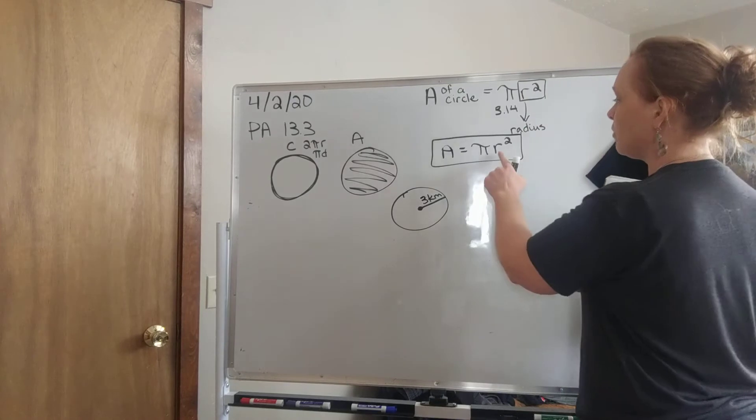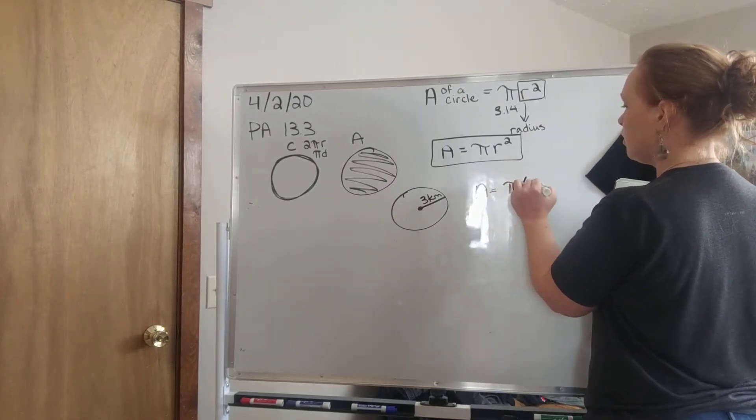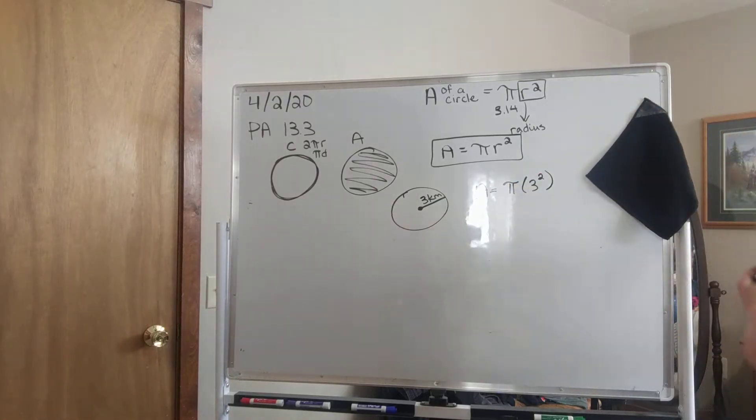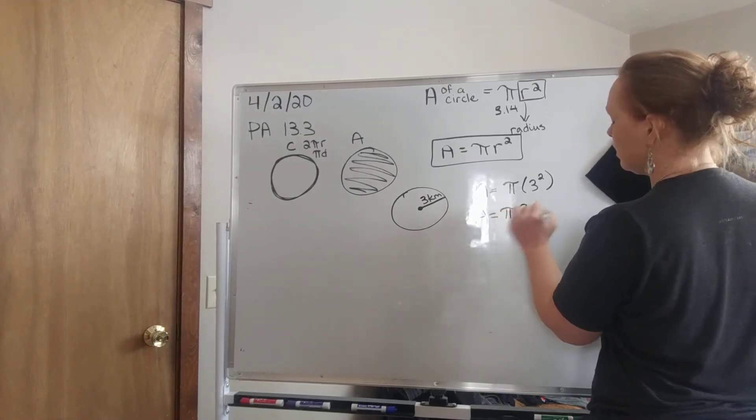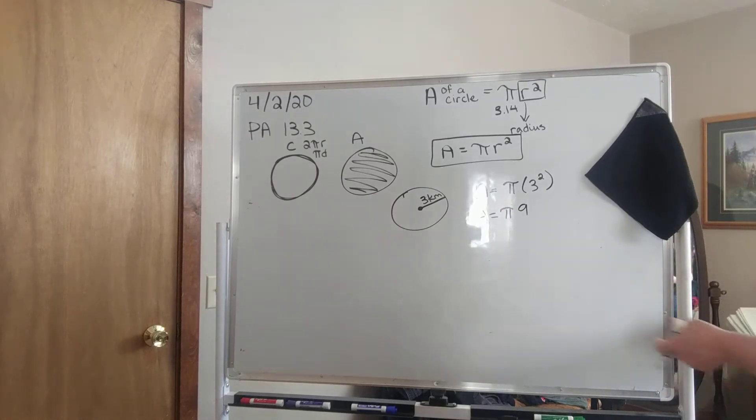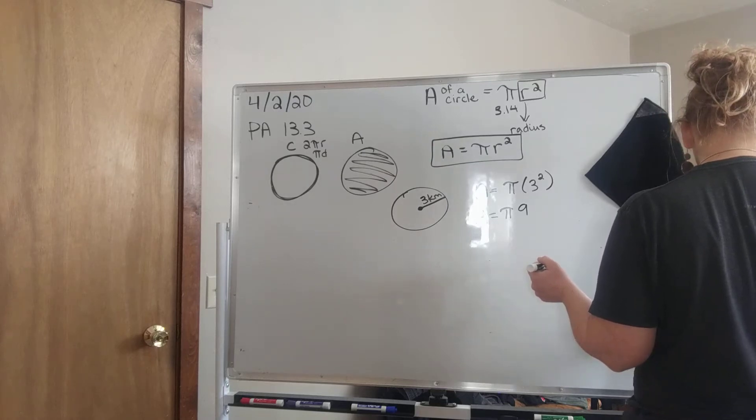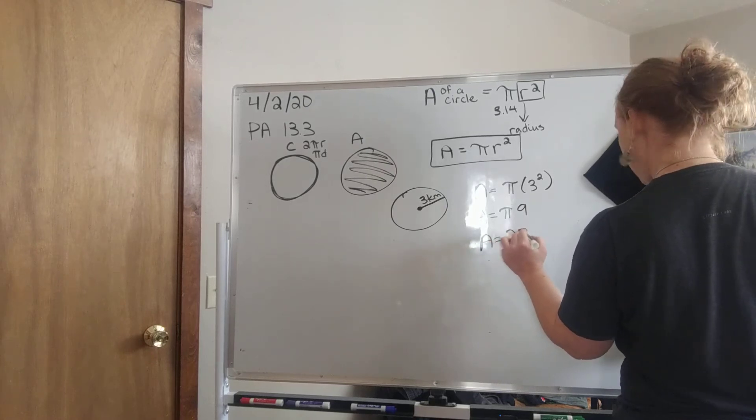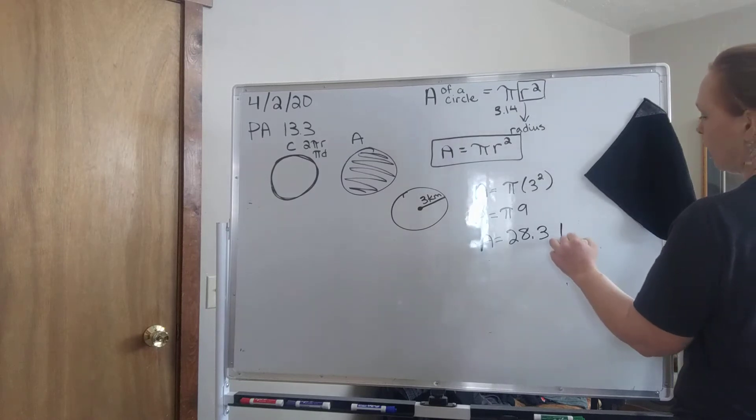Given that, we can plug that in. Area equals pi 3 squared. 3 times 3 is 9, so area equals pi 9. So that one you can actually put in your calculator, and you should get 28.3. Make sure you round to that nearest tenth, kilometers squared.